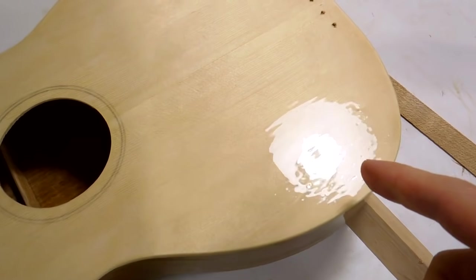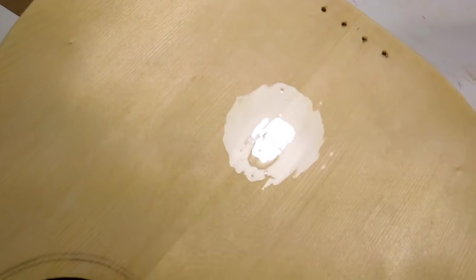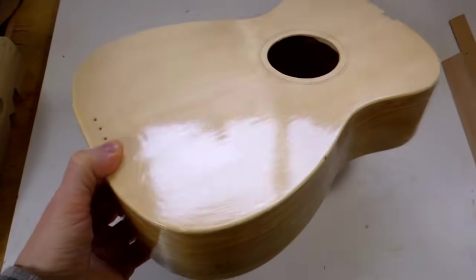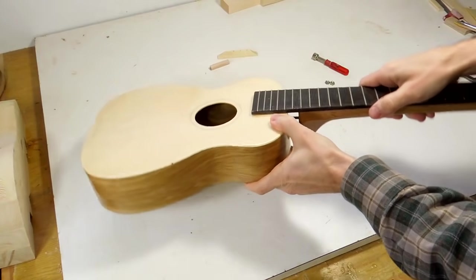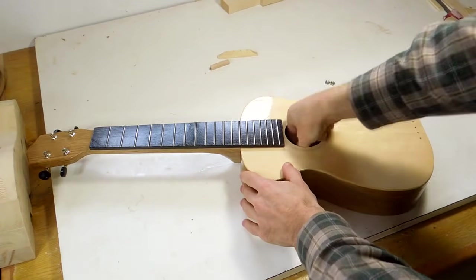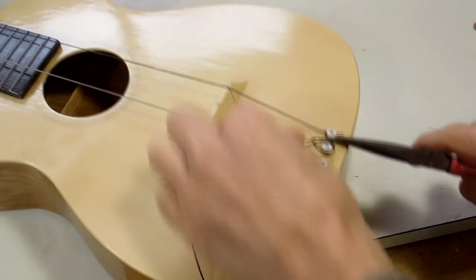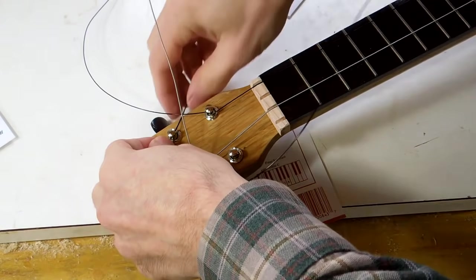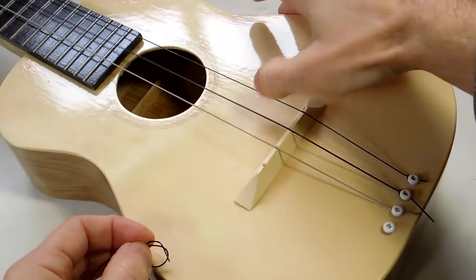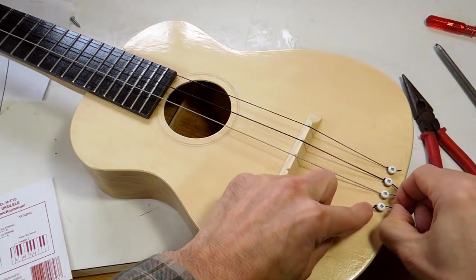The general advice for varnish is to put on many thin coats. But I like to put on the really thick final coat so that kind of surface tension hopefully pulls it smooth and there'll be a glossy surface. Well, this finish wouldn't be up to Pat Hawley standards.